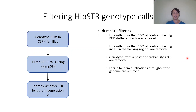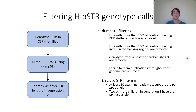To identify de novo STRs in generation two, we required at least 10 spanning reads supporting the de novo allele. Since the CEPH whole genome data is sequenced at 30×, that requires about one-third of reads mapping to the de novo allele. We also required the de novo allele to be seen in at least two grandchildren — because STRs are highly mutable and difficult to sequence, having at least two offspring carry the allele was really important for confidence.